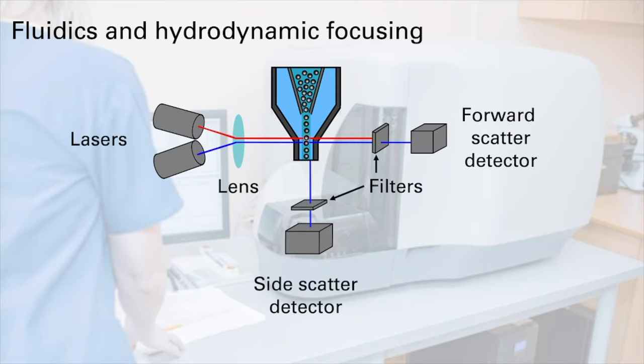The second important element of a flow cytometer are the lasers and optics. Each cell in the fluid stream passes one at a time through one or more laser beams and causes some disturbance to that beam, which can be detected by a range of different optical sensors. At a most basic level, we can interrogate cells based on two types of scattered light, which we call forward and side scatter.